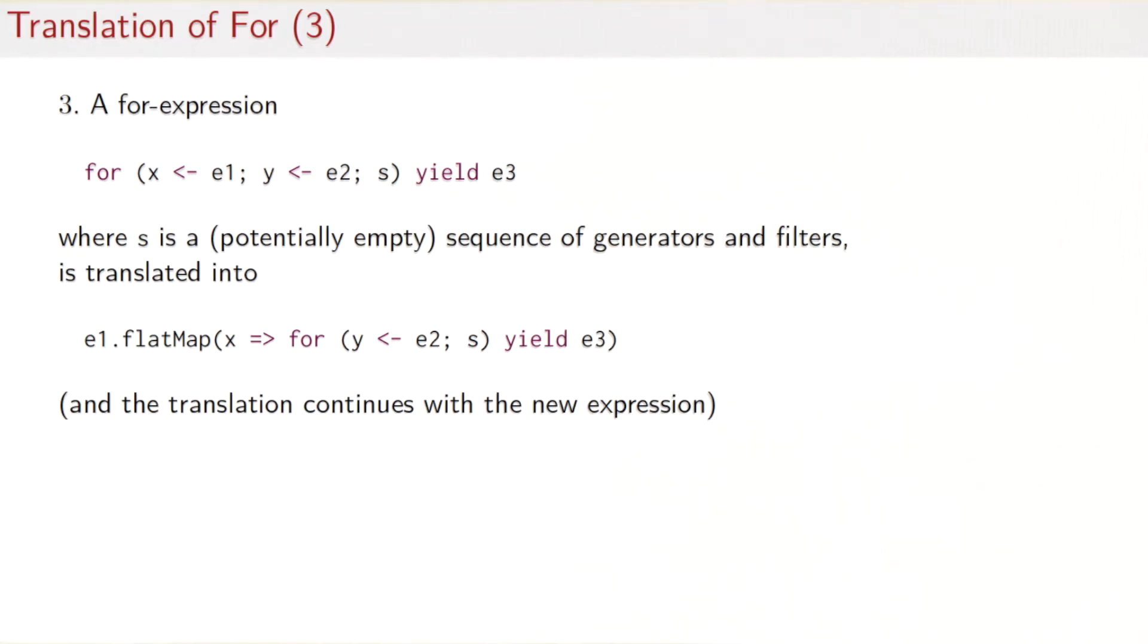That for expression will be translated into a call of flatMap. So the idea here is that if we take the for expression that takes all the remaining computations, so we generate a y from e2, then we do something more and then we yield e3, that would be a collection valued operation because we have a generator here.